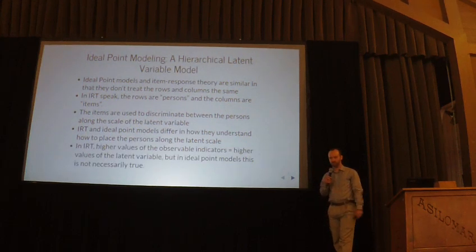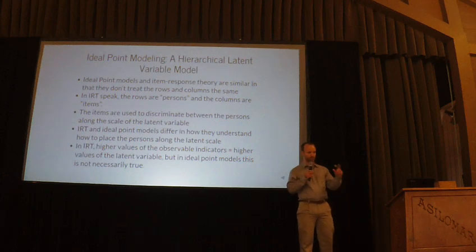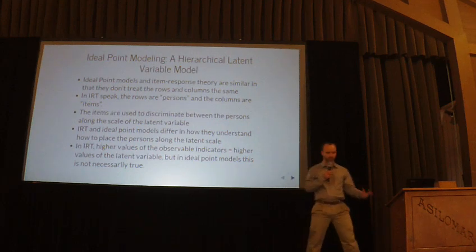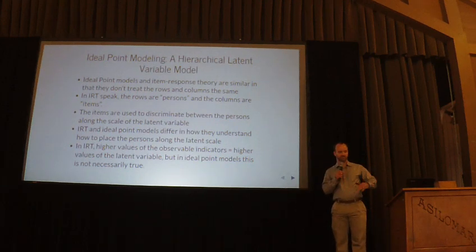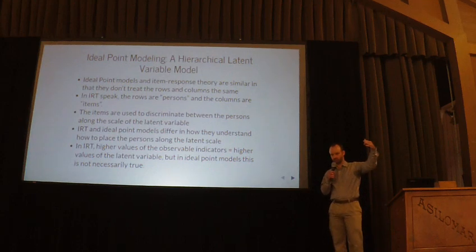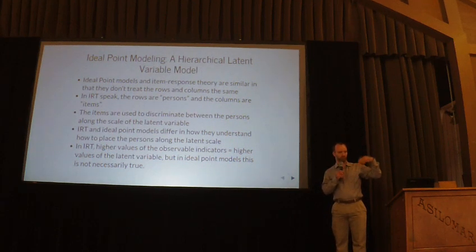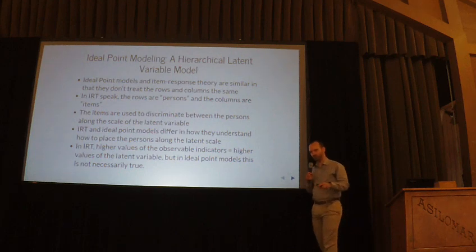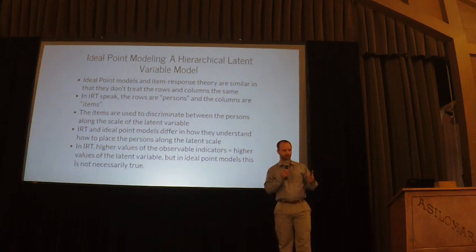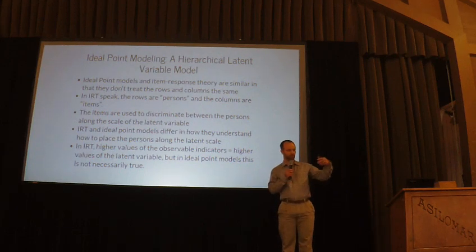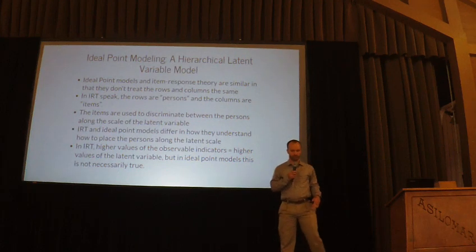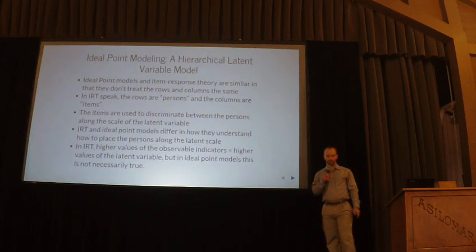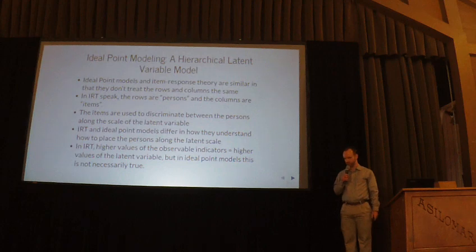IRT and an ideal point model differ primarily in how they use the items to differentiate between people. In an IRT model, as the observable indicators increase — as you do better on the test questions — the latent variable, your ability, also increases. In an ideal point model, it could be the opposite: as the observable indicators increase, the latent variable actually decreases. It's going to be conditional on each item or each column in the matrix.